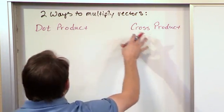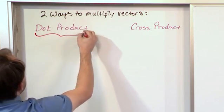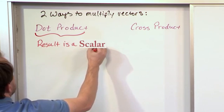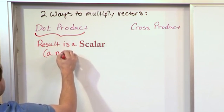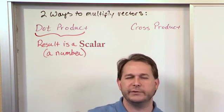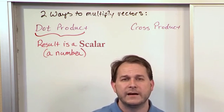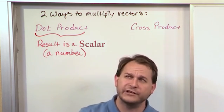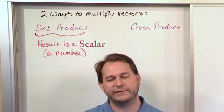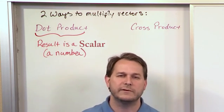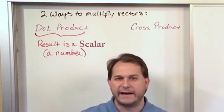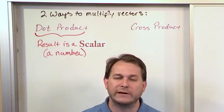Now you might ask: when do I use one versus the other? The main difference is that when you do the dot product of two vectors, the result is a scalar — you just get a number back. In fact, the dot product is sometimes called the scalar product. So I might dot vector A and vector B together and get two, or six, or 49 — but I will never get a vector back when I dot two vectors together.